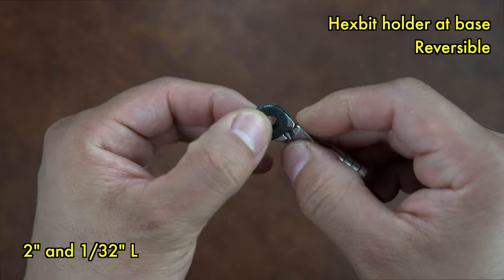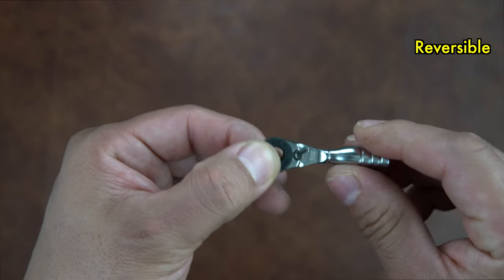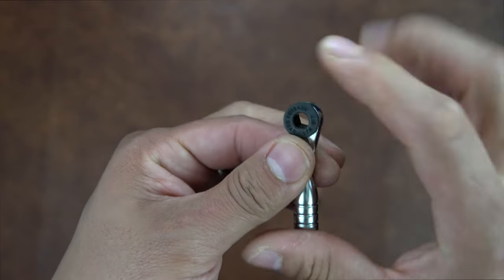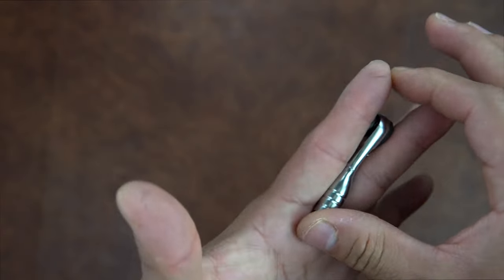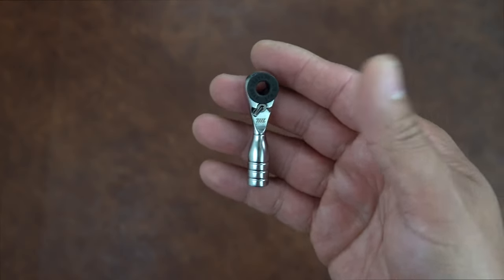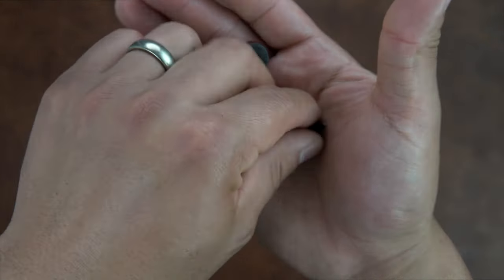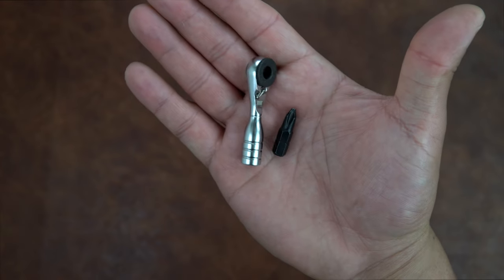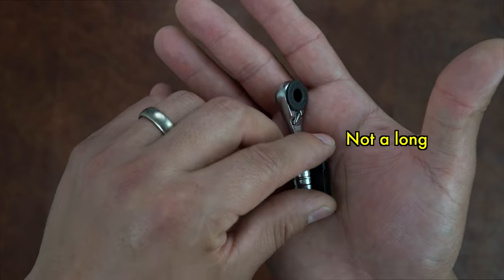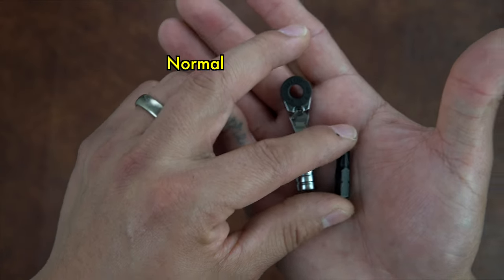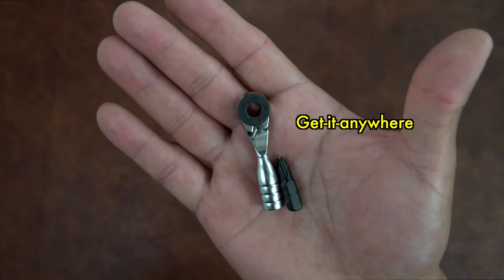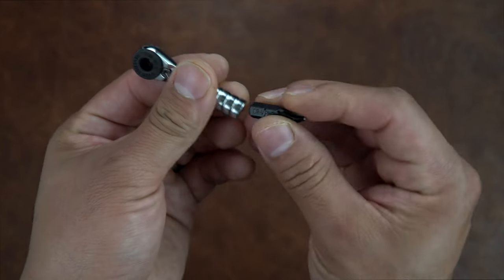It is reversible - would you imagine, a reversible mini? My fingers are longer than this mini ratchet. Let me show you something. There's a hex bit, a regular size hex bit - this isn't a short, this isn't a long, this is your normal run-of-the-mill, get it anywhere hex bit. It is almost the same size.